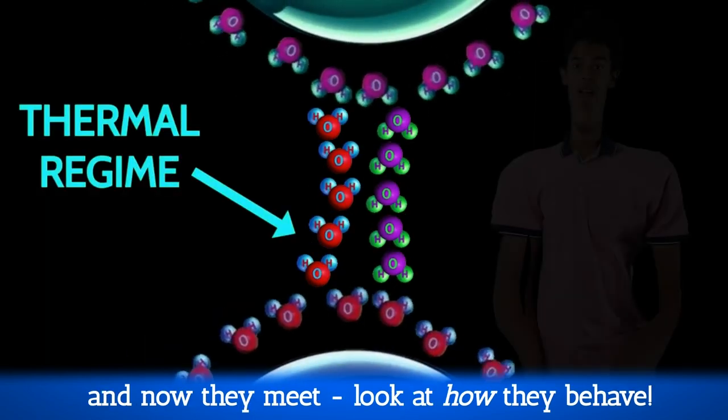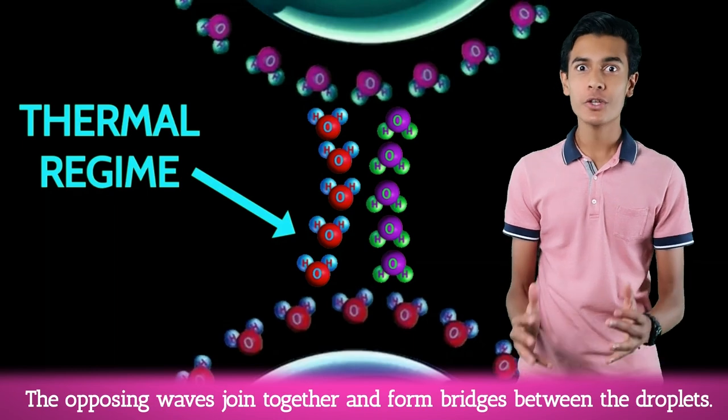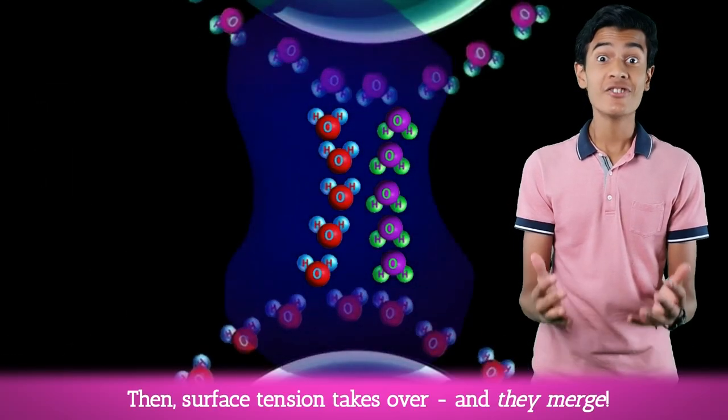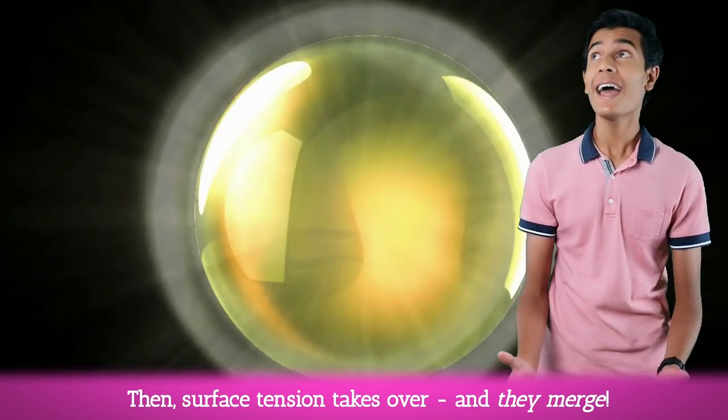Look at how they behave. The opposing waves join together and form bridges between the droplets. Then, surface tension takes over and they merge.